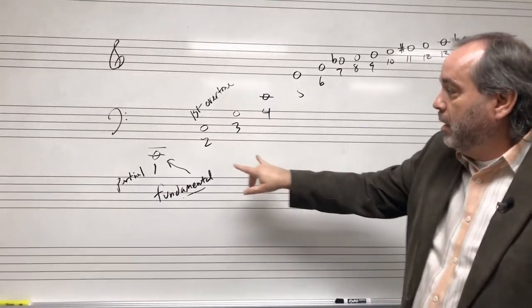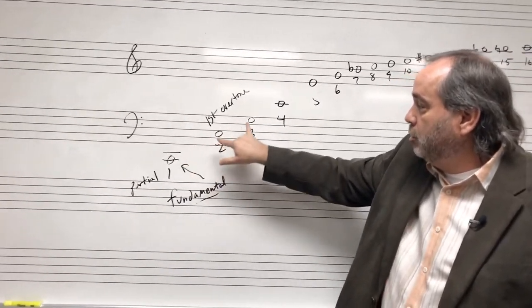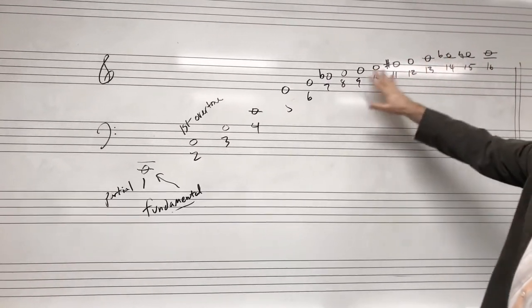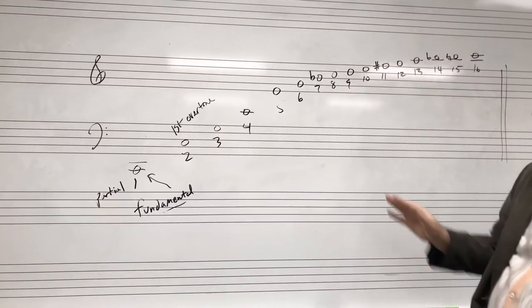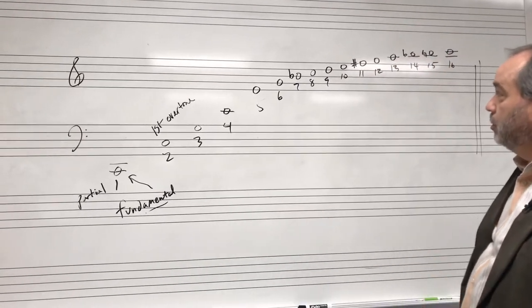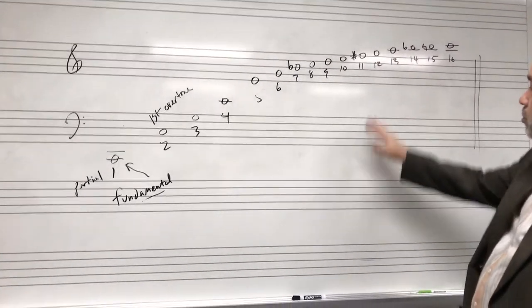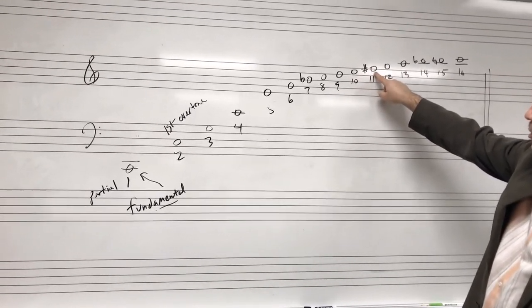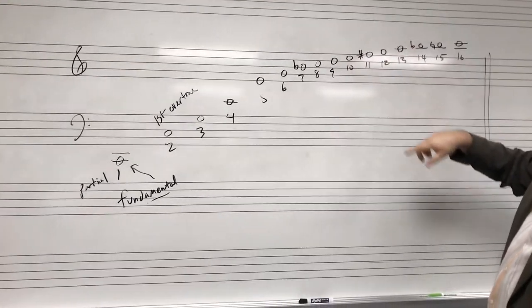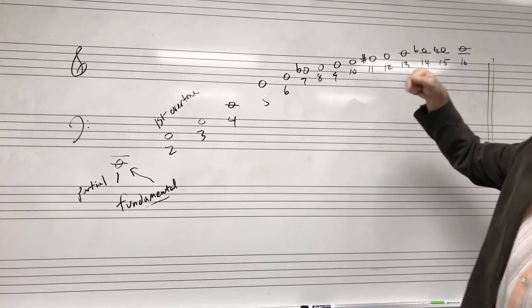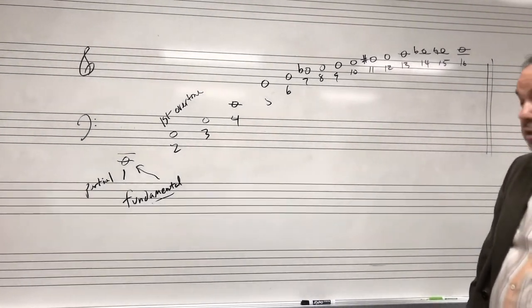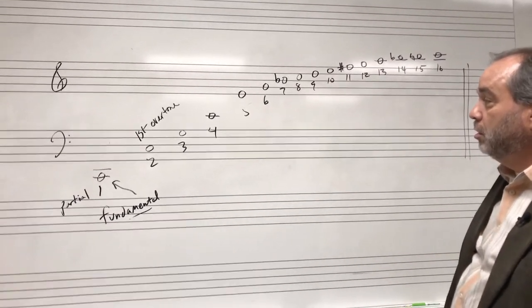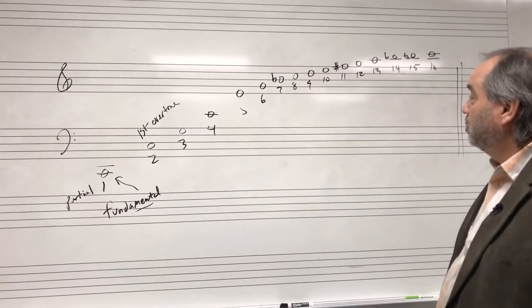So what I want you to see from here is that the intervals become smaller as we ascend. And a lot of these notes are so out of tune, they can hardly be called these notes. But traditionally, this is the way we write it. This F sharp really, in this overtone series, would be a lot lower than that. That A is, some people even write it as A flat because it's so low. But this is the way it's traditionally been taught in the old music theory books.